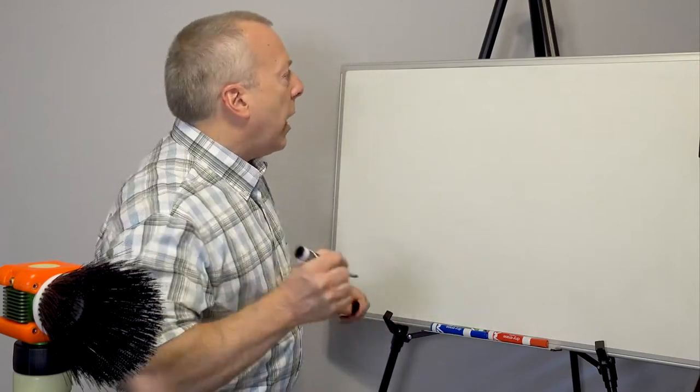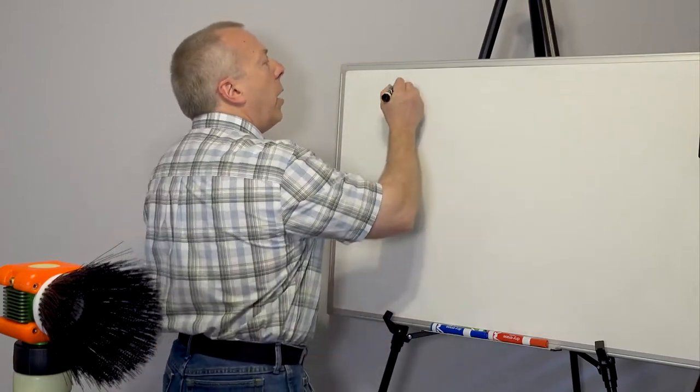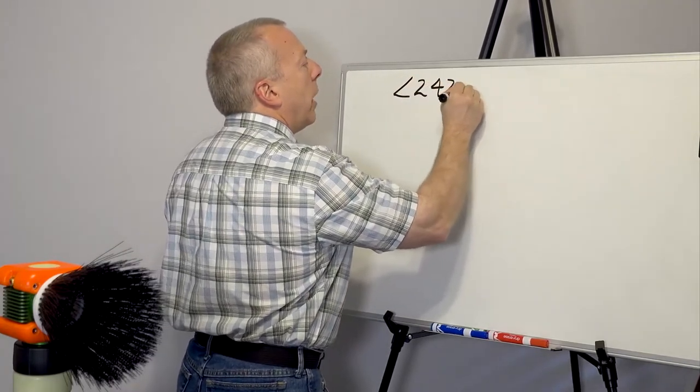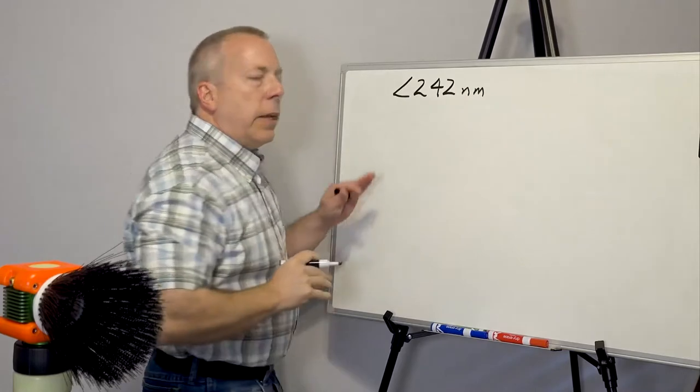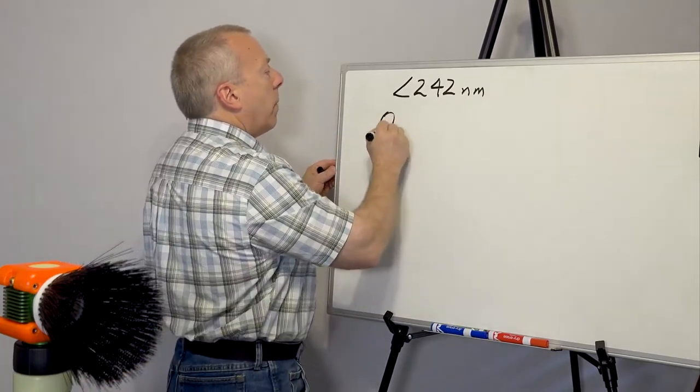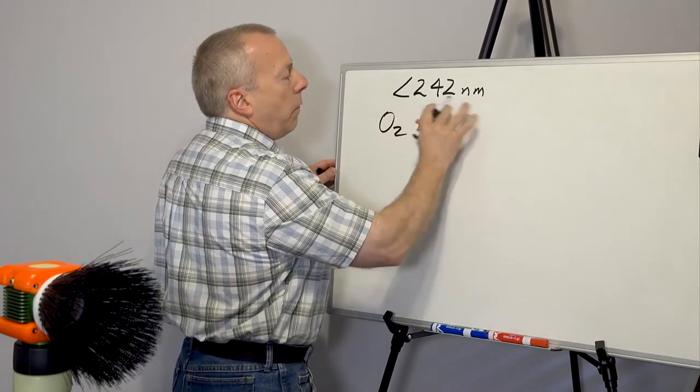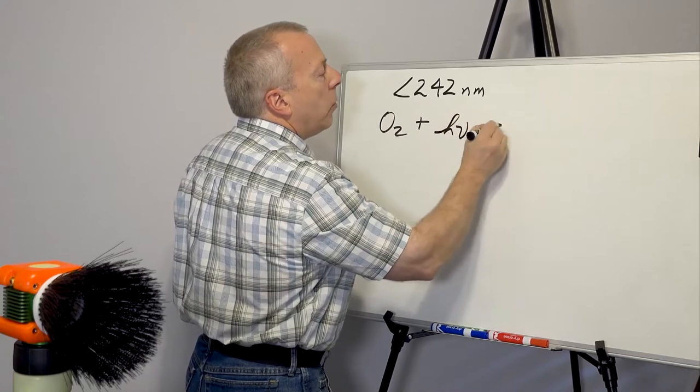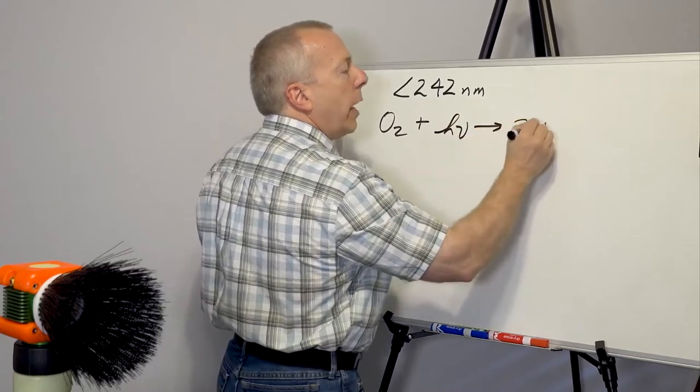In this particular case, he showed that at wavelengths less than 242 nanometers in the UVC range, that the oxygen molecule plus the photon of light at 242 h nu will go to two oxygen atoms.